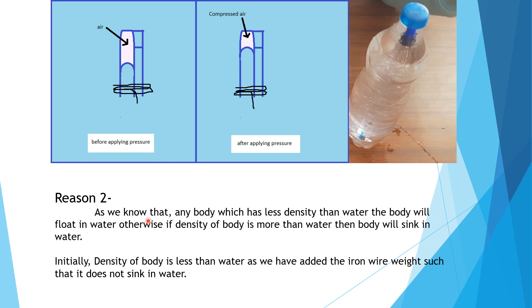As we know, anybody which has less density than water, the body will float in water. Otherwise, if density of body is more than water, then body will sink in water. So initially, the density of body is less than water as we have added the iron wire weight such that it does not sink in water.